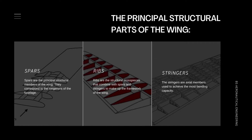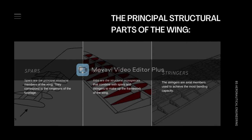Wooden spars are usually made from spruce. They can be generally classified into four different types by their cross-sectional configuration. They may be solid, box-shaped, partly hollow, or in the form of an I-beam.